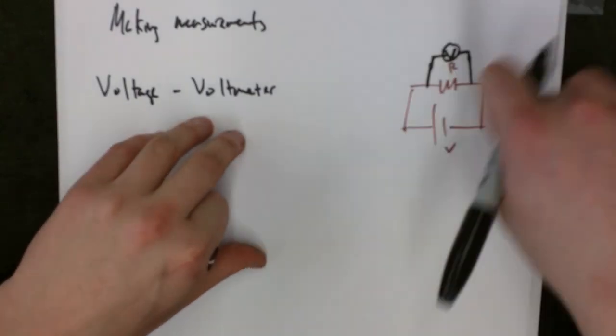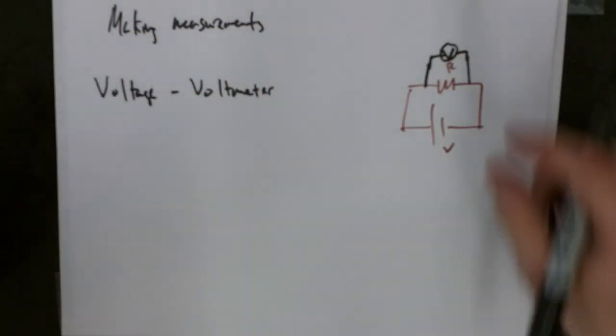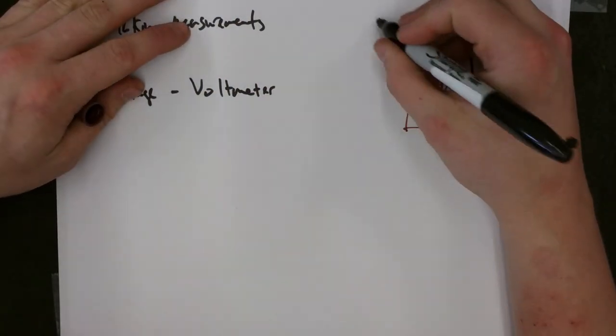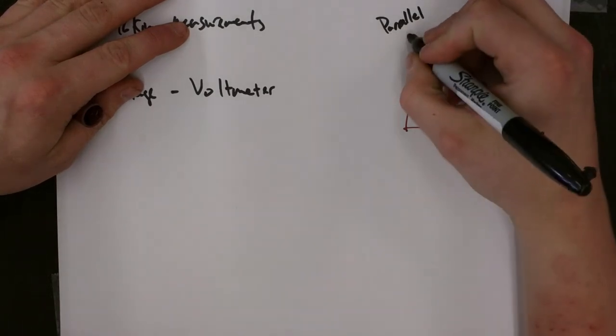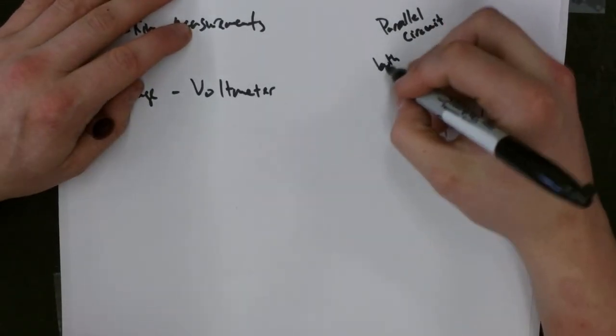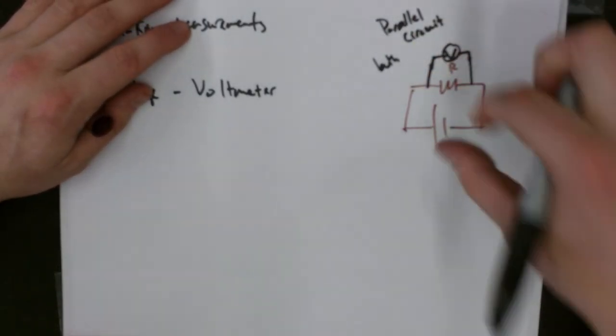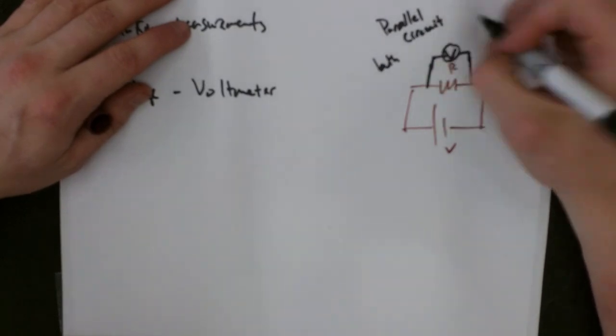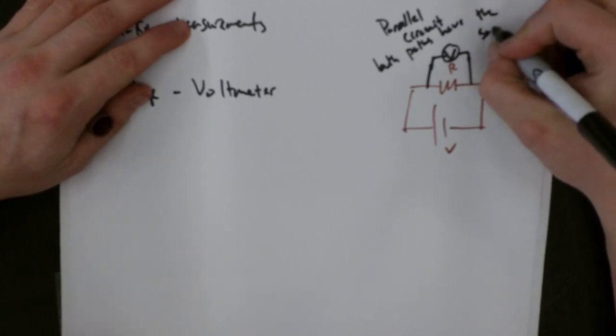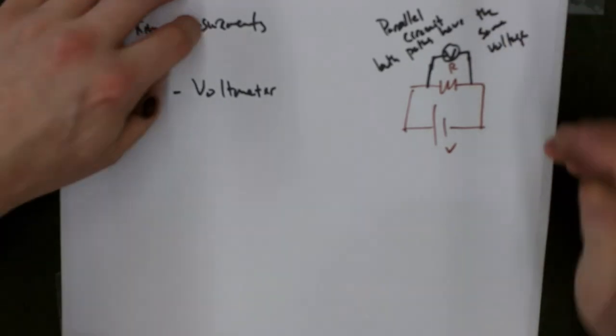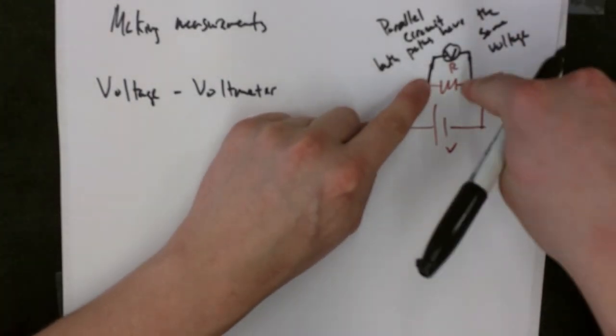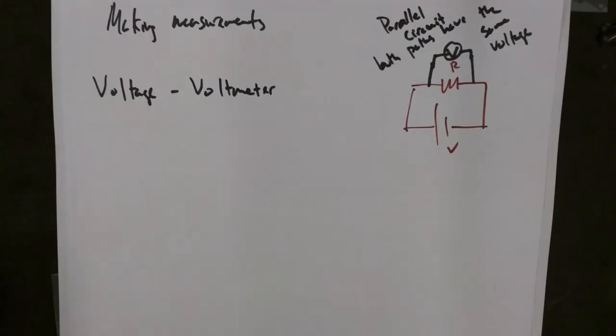Within a parallel circuit, I know that both of these parts will have the same voltage. So parallel circuit, both or all, if there were three layers to this, both paths have the same voltage. So if I hook that up there and there, I could figure out the voltage drop over this resistor. Excellent.